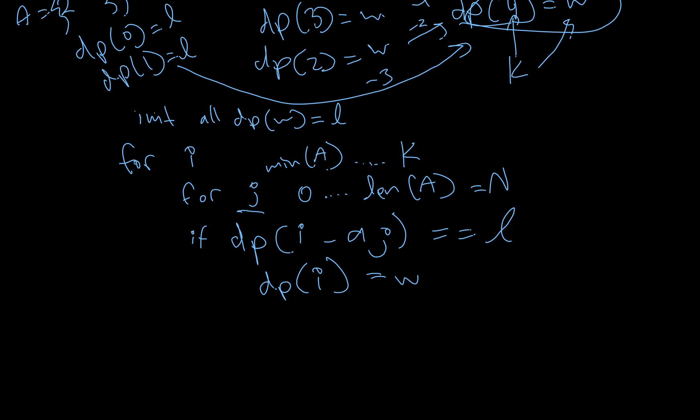And then, all you do is you would return, if DP of K is a win, you would give first. But, if DP of K is lose, then you go second.